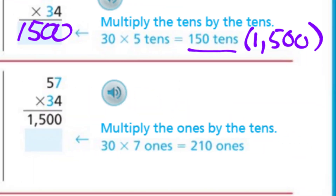Step two: it says we're going to multiply the ones by the tens. You can see it's highlighted the seven and the three. So we're going to take 30 and multiply it by the seven ones, which is 210 ones, which is really 210. Now I need to shade that part of the model.